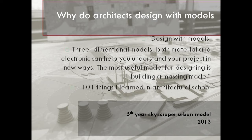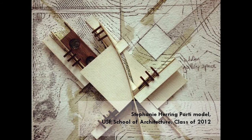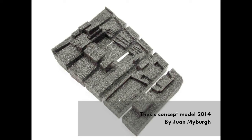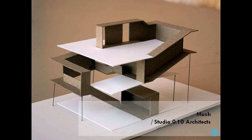Why do architects design with models? Well, according to the book '101 Things I Learned in Architectural School,' designing with models gives you a three-dimensional plane to work with. It's useful building with models, especially if you start designing with mass models. The picture at the back is a fifth year skyscraper urban model designed by TUT students in 2013. This is a concept model by Stefani Herring. The next one is another concept model built out of foam used to see the spatial orientation and massing of the site, done by Jean Mayberg for his thesis concept in 2014.